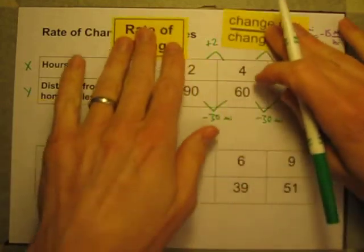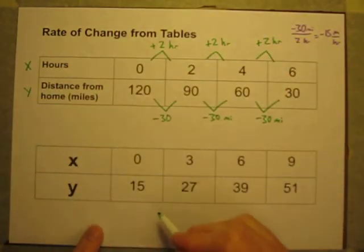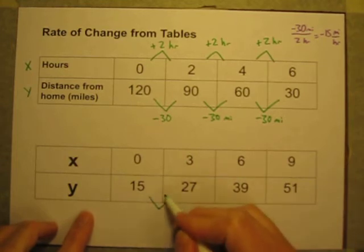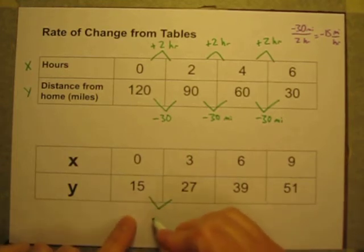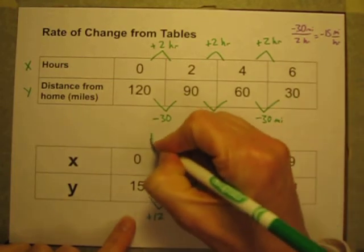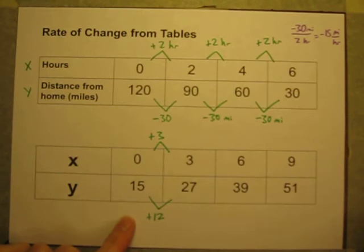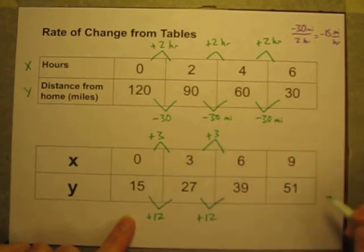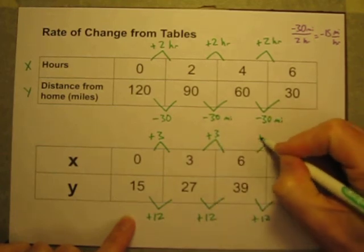So let's work on that and figure that out. I can see that on this data table here, it looks like I'm gaining 12 y's. So I gain 12 y's when I gain 3 x's. I gain 12 y's when I gain 3 x's. I gain 12 y's when I gain 3 x's.